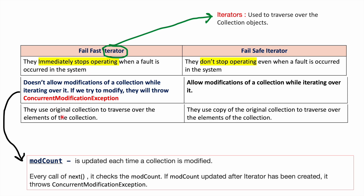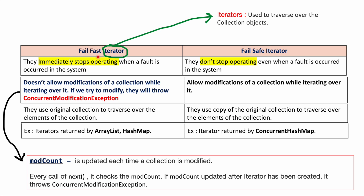FailFast iterators use the original collection to traverse over the elements of the collection. That is the reason if you are performing any modification, it will immediately give an error. FailSafe iterators use a copy of the original collection to traverse over the elements. That is the reason if you are performing modification operations in FailSafe iterators, they will not get to know, and that is why they will not give any error. The best examples for FailFast iterators are ArrayList and HashMap. The best example for FailSafe iterators is ConcurrentHashMap.